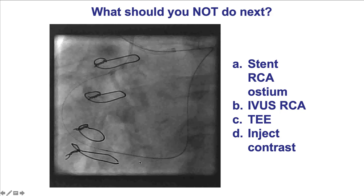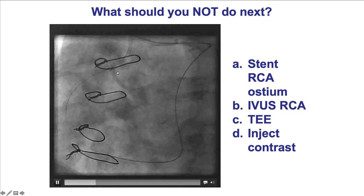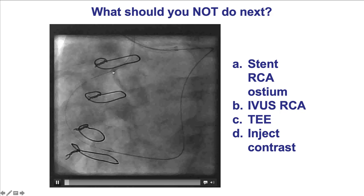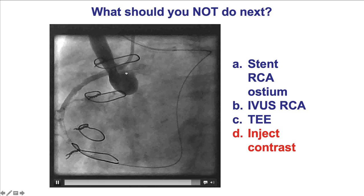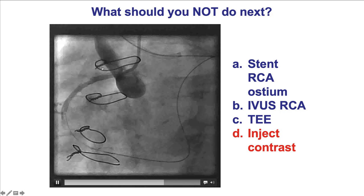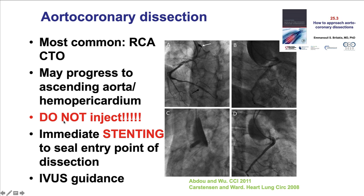Moving on to another kind of complication — this is a patient who has a major aortocoronary dissection, which likely occurred due to contrast injection despite some dampening in the ostium of the right coronary. The worst thing you can do for aortocoronary dissections is to inject contrast, which can actually expand the area of dissection and the subintimal hematoma. The number one thing is to not inject. Number two, place a stent protruding all the way to the ostium of the vessel, post-dilate accurately, and that in most cases will suffice to treat this complication.